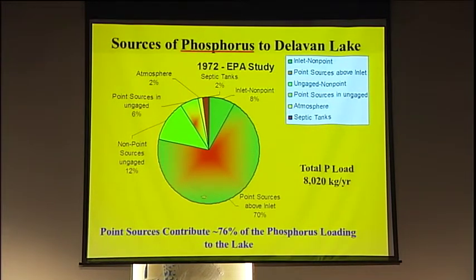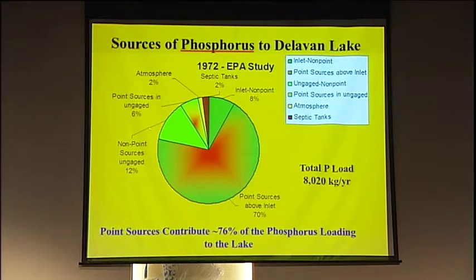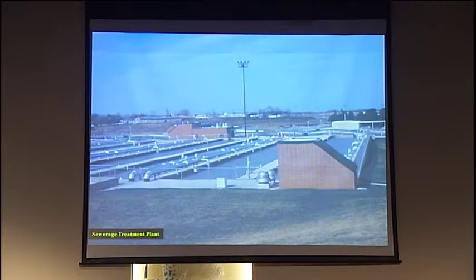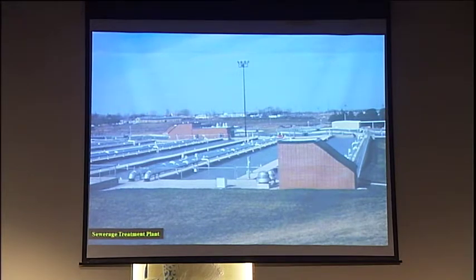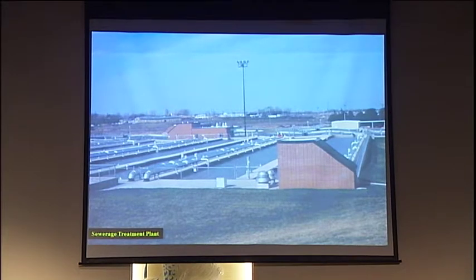What they found is that most of those were coming from point sources — not too unusual in the 1970s — and then the rest was coming in from the agriculture watershed, atmosphere, and a few other things. So because of that, they identified that number one source, which was the sewage treatment plant. They put a whole new sewage treatment plant in at the cost of many millions of dollars, and then diverted all the water out of the watershed. That last study showed that 76% was coming in from point sources, so they thought that by treating that, they could solve the problem.